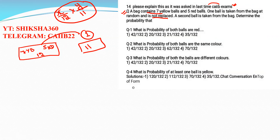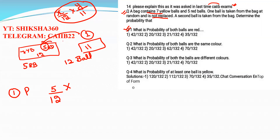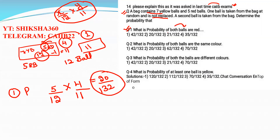Now let's discuss the first question: what is the probability that both the balls are red? For the first ball to be red: there are five red balls out of 12 total, so the probability is 5/12. When the second ball is also to be red: one red ball has been removed, so four red balls remain out of 11 total. So the probability is 5/12 × 4/11 = 20/132.